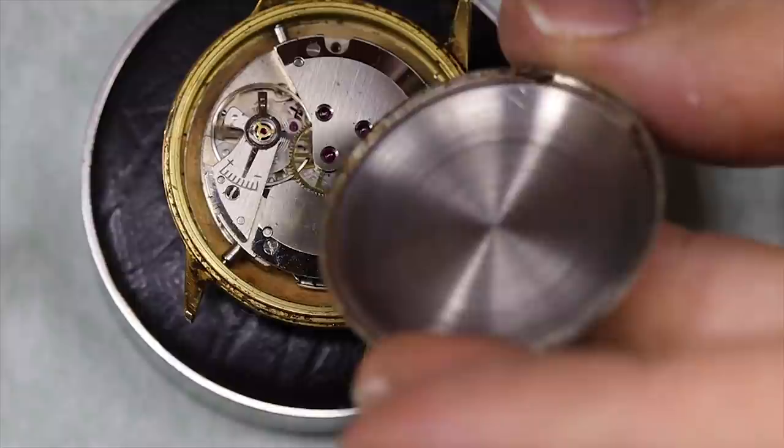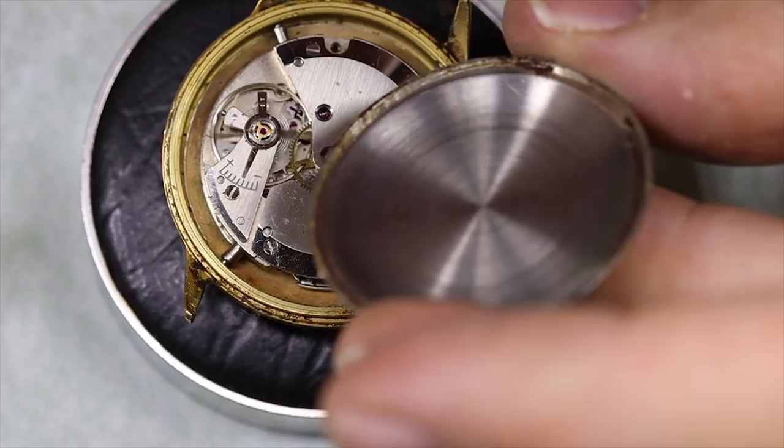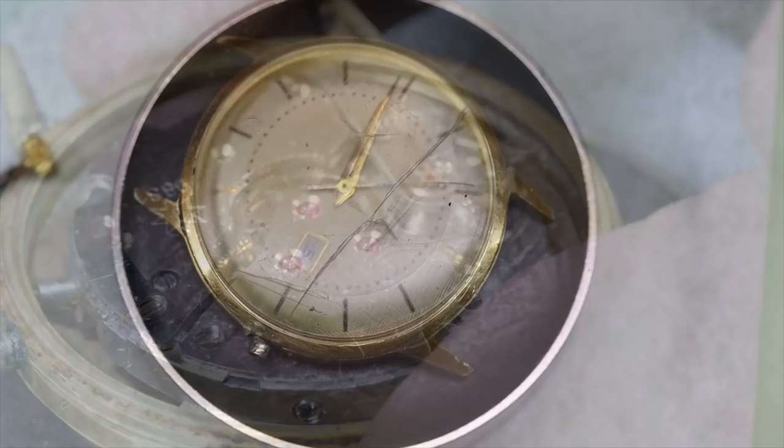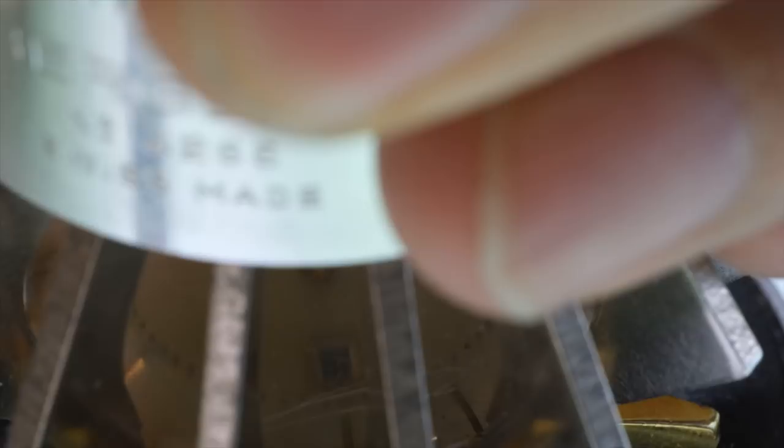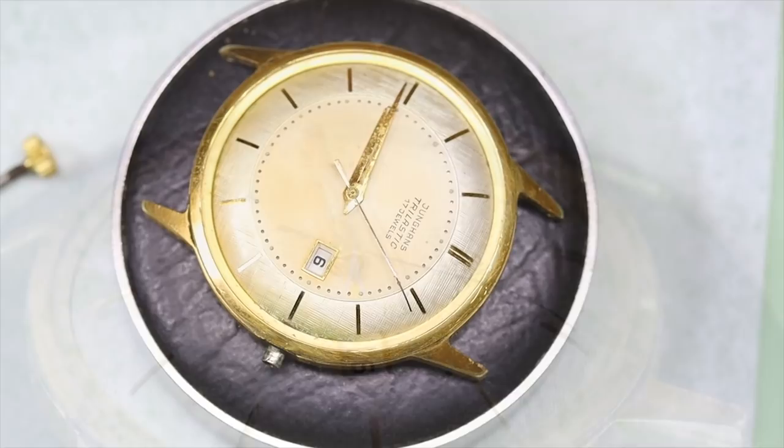Now with the case back off, we see there are no case screws, no movement ring. What you do have is those three feet, if you will, that extend from the movement into the case, and that is where the watch takes its name from: Trilastic, as you can see on the dial.